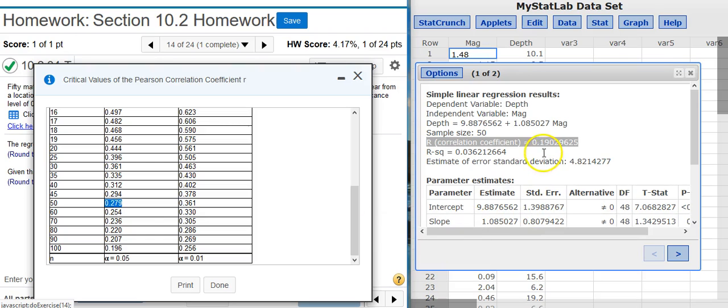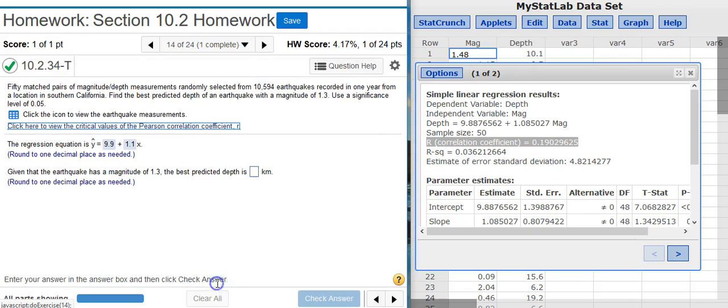If this R value were greater than the critical R value, then we could use it to make predictions. But that's not the case here. We have a bad model. So we're not going to use it to make predictions. Instead, we're going to use the mean value of the Y values.